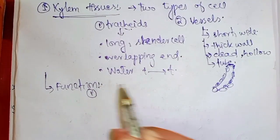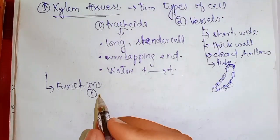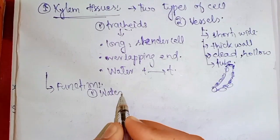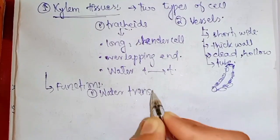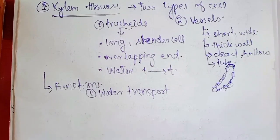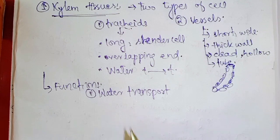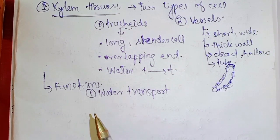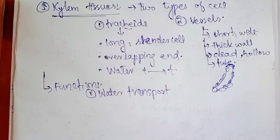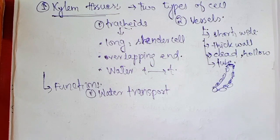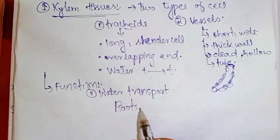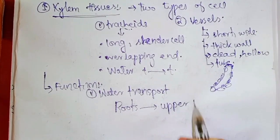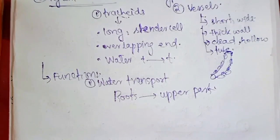First of all, we have to say that water is transported. Water is transported from the roots. The roots transport water and the xylem tissues are responsible for the transport of water and dissolved substances from the roots to the upper parts.